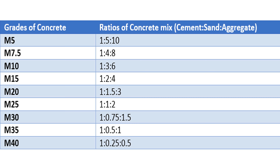For M5 grade of concrete, the cement-sand-aggregate ratio should be 1:5:10. For M7.5 grade of concrete, the ratio should be 1:4:8. For M10 grade of concrete, the ratio should be 1:3:6. For M15 grade of concrete, the ratio should be 1:2:4. For M20 grade of concrete, the ratio should be 1:1.5:3. For M25 grade of concrete, the ratio should be 1:1:2.